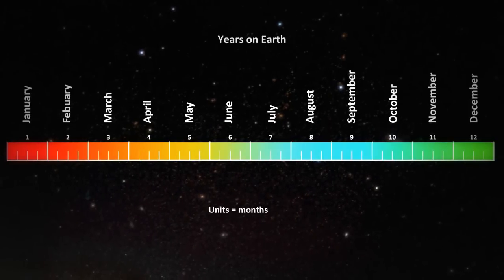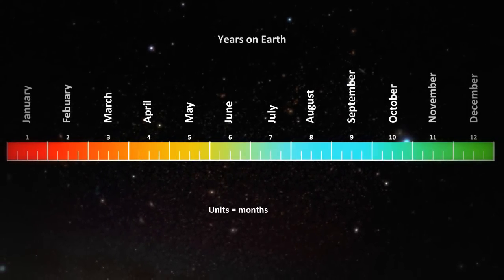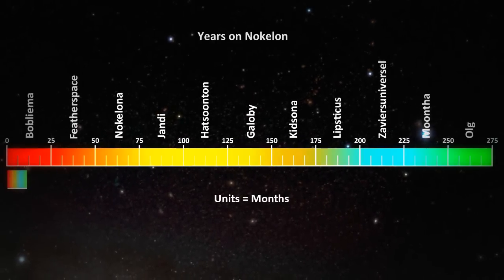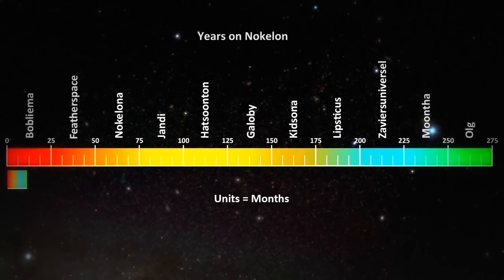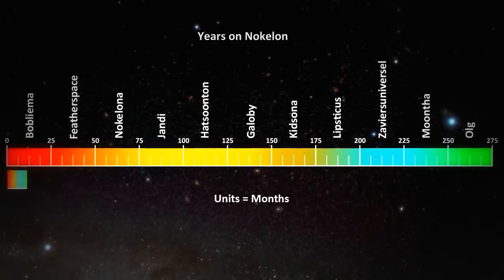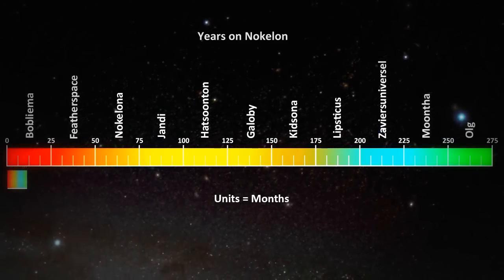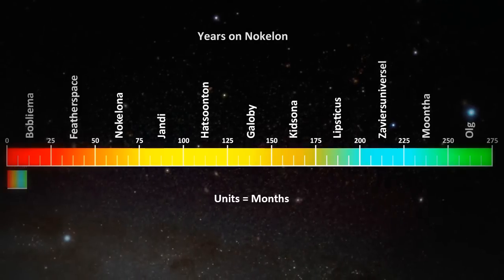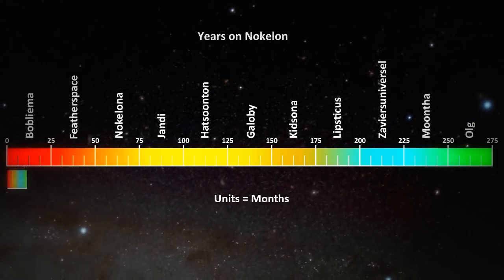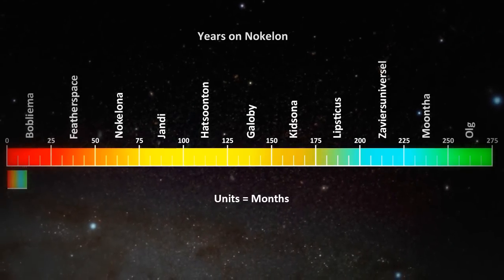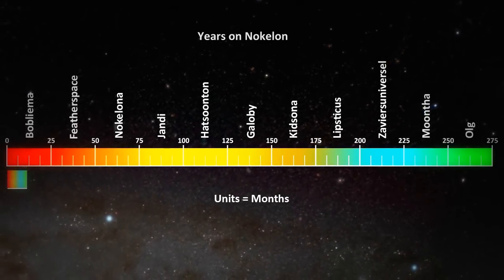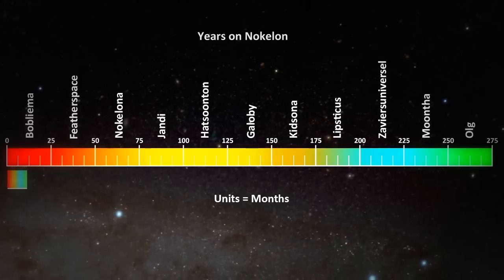We will compare the lengths of the years with Nolcolon and Earth. Earth's year is 12 Earth months. Nolcolon's year is 275 Earth months or 23 Earth years. The Nolcolon months are called Bobulima, Feather Space, Nolcolona, Jandy, Hatsunton, Galaby, Kidsona, Lipstickus, Saviour's Universal, Moonthar and Oog. That makes 11 Nolcolon months in a Nolcolon year. A Nolcolon month is equal to about 2 Earth years.